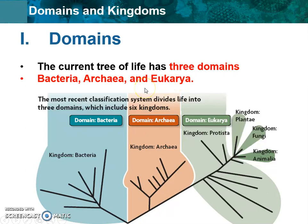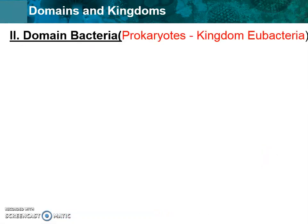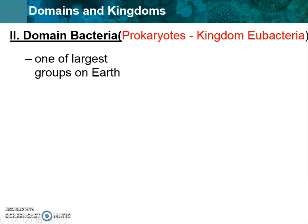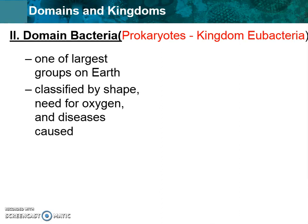We'll learn about each domain in more detail throughout the rest of this unit. The first domain we'll talk about is bacteria. This is a prokaryote, and it also has the kingdom eubacteria — eubacteria meaning true bacteria. It is one of the largest groups on earth, and it is usually classified by the shape of the organism.